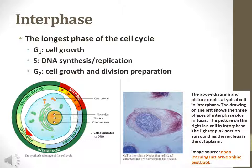Interphase, meaning the time between cell division events, refers to the first gap phase, G1 phase, the genetic synthesis, S phase, and the second gap phase, G2 phase. Most time of the cell cycle is spent carrying out normal functional processes in interphase. The diagram and picture shown depict a typical cell in interphase. The drawing on the left shows the three phases of interphase plus mitosis. In the photo on the right, the dark purple portion is the chromosome in the nucleus, and the lighter pink portion surrounding the nucleus is the cytoplasm.